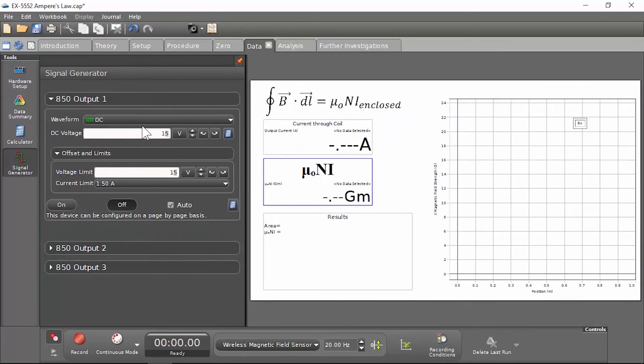On the signal generator, we want to make sure that we have a DC output with 15 volts and that it's set to Auto.